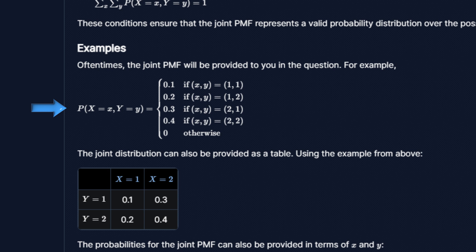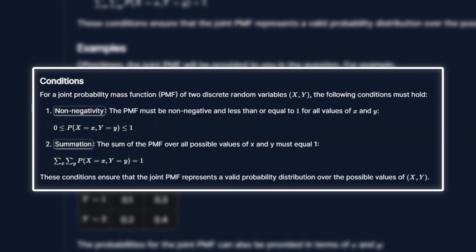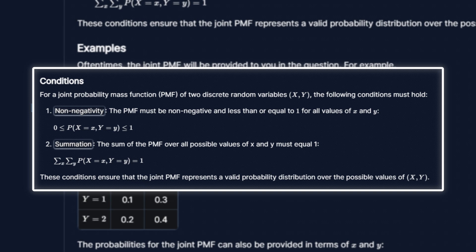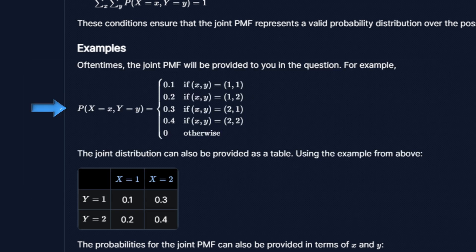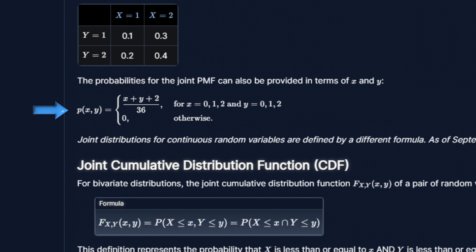Similar to the conditions for a univariate discrete random variable, the sum of all probabilities over all values of x and y must total 1, and each probability must range from 0 to 1. In this example, both conditions are met, so this is a valid joint PMF. Another way you can see this written is as a 2 by 2 matrix, where either the columns or the rows represent x or y, and within the matrix are the probabilities. In the second example, the probability is a function of x and y rather than a constant number. This PMF also satisfies both conditions.